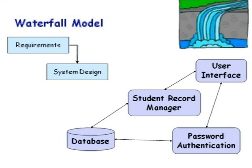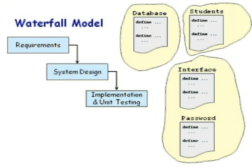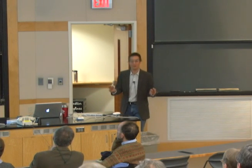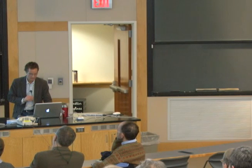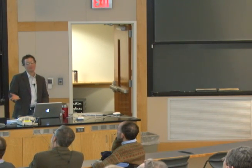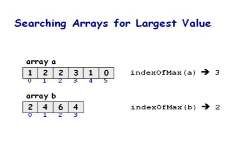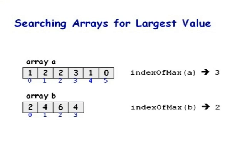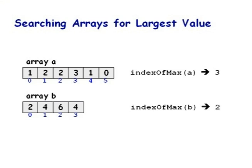We take each individual piece and hand it off to a different group to implement separately, because it's easier to understand and test smaller pieces before integrating them. Let's think about a simpler example: given a list of numbers, find the biggest one. In programming, lists of numbers are often stored in arrays. Here's an array of six numbers — 1, 2, 2, 3, 1, 0. The blue numbers are the index into the array. The index of the largest number in array A is three; in array B it's two. We want to write code that does that.